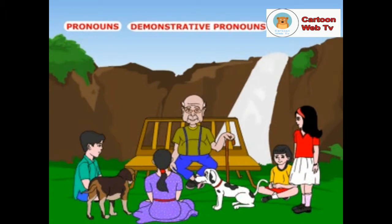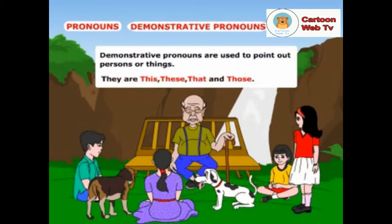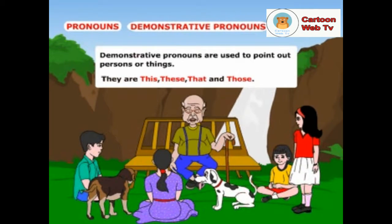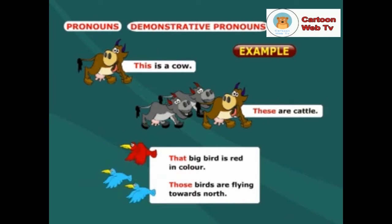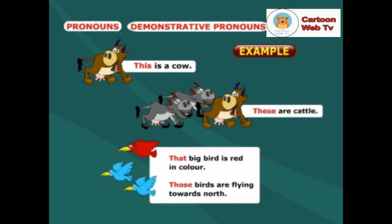Let me explain the demonstrative pronouns. The demonstrative pronouns are used to point out persons or things. They are this, these, that and those. Here are examples: this is a cow. These are cattle. That big bird is red in color. Those birds are flying towards north.